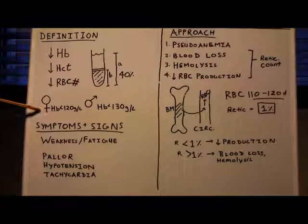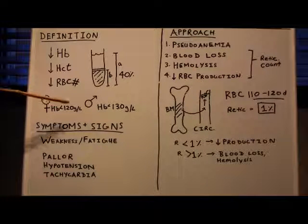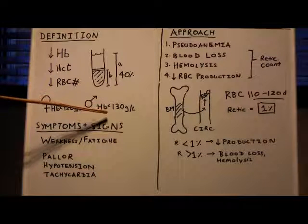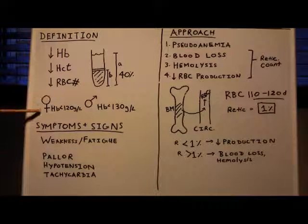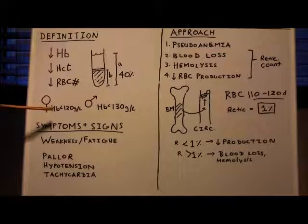In women, anemia is considered a hemoglobin less than 120 grams per liter. In men, anemia is considered a hemoglobin of less than 130 grams per liter. These numbers may vary depending on what source you look at, but they're usually around 120 and 130.